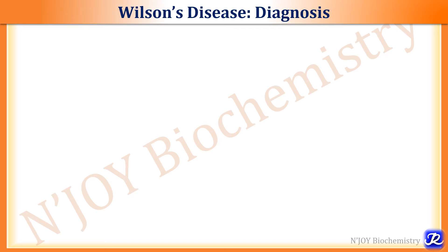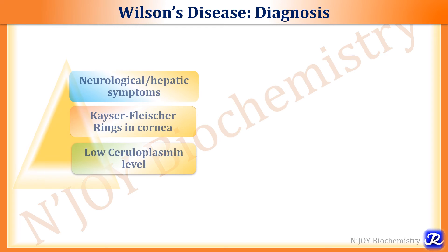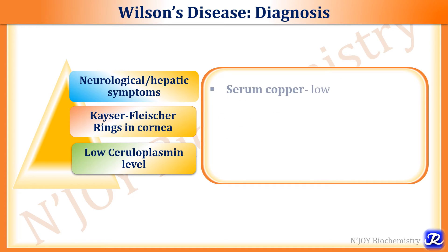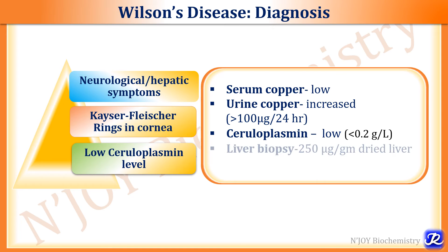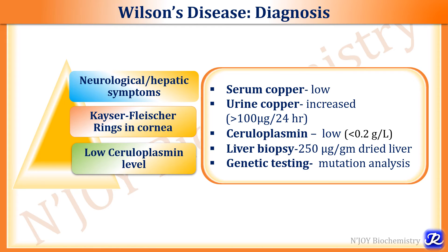Diagnosis of Wilson's disease is based on clinical features and laboratory findings, most importantly neurological and hepatic symptoms, Kayser-Fleischer ring in the cornea, and low ceruloplasmin level. On laboratory investigation, serum copper is low, but urine copper is increased at more than 100 micrograms per 24 hours. Ceruloplasmin is less than 0.2 g/L. On liver biopsy, copper level is 250 micrograms per gram of dried liver. Genetic testing by mutation analysis can confirm the diagnosis.